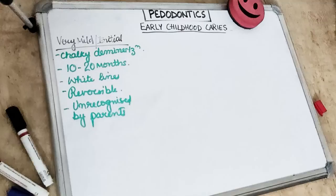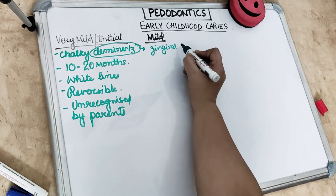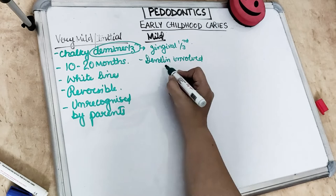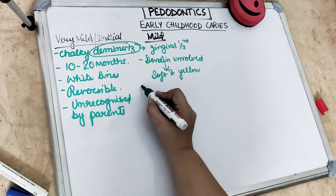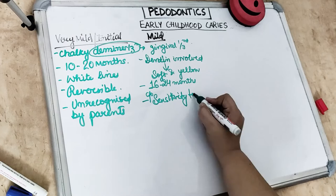Stage 2 — mild — shows demineralization in the gingival one-third of the tooth with moderate cavitation. The dentine gets involved with rapid development, causing enamel to collapse, and the exposed dentine appears soft and yellow. Mild lesions are present in children between 16 to 24 months of age, and the child complains of sensitivity to temperature changes.